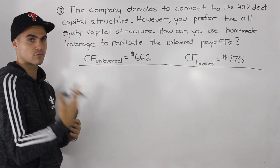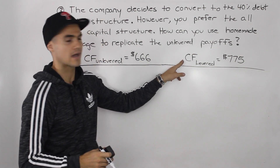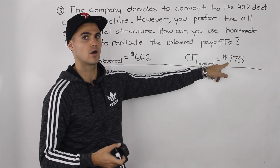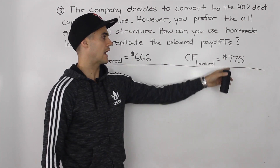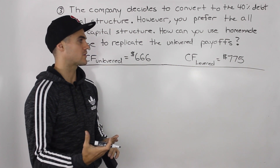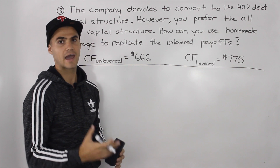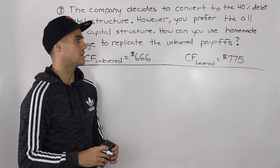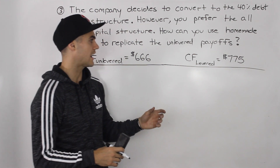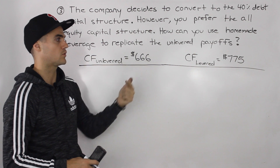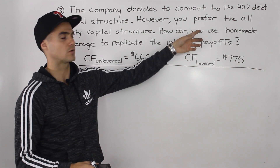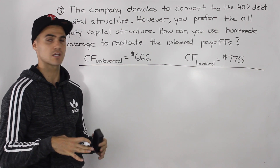The company converts to a 40% debt capital structure. The cash flows we receive as shareholders owning 150 shares is $775 — we calculated that in part one. Currently those cash flows are greater, but we as shareholders don't want to take that extra risk of EBIT potentially going down and having our losses magnified. We want to minimize risk and decrease leverage. We can't tell the company to decrease their debt, so we'll have to do it on our personal side using homemade leverage.